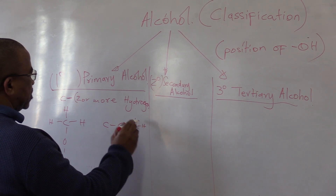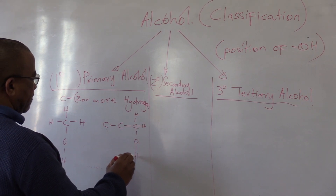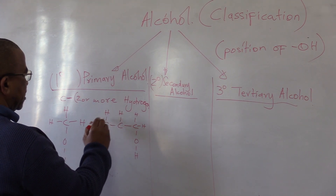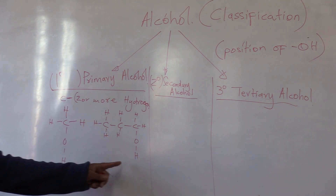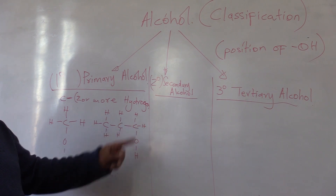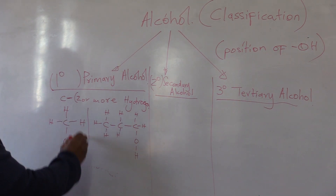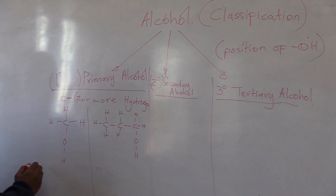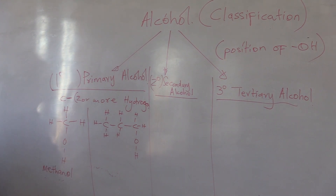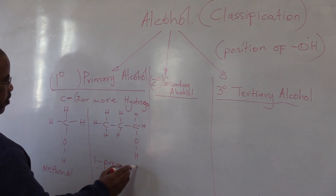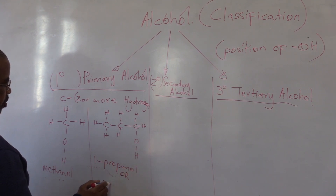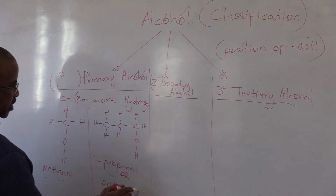Looking at position one, we check where the OH is. The OH is bonded with a carbon that has two or more hydrogens. An example of a primary alcohol is methanol, or one-propanol, also written as propan-1-ol.